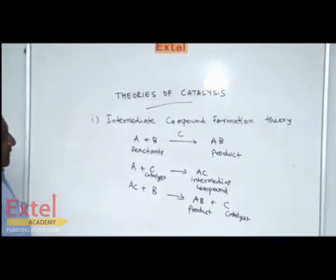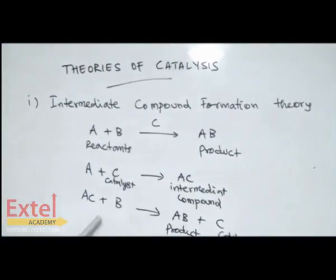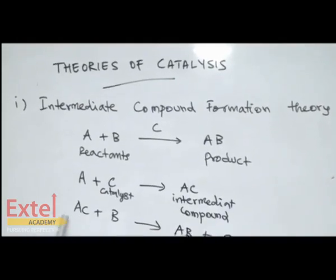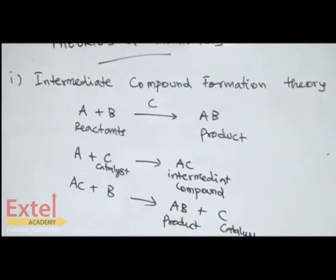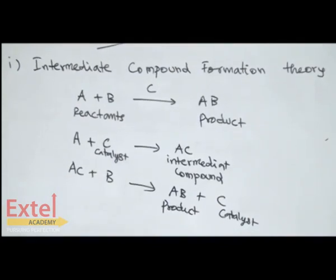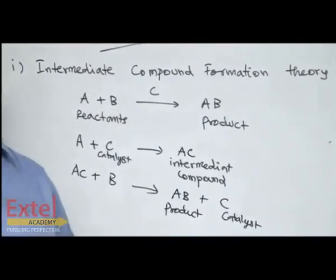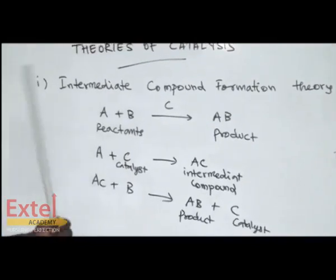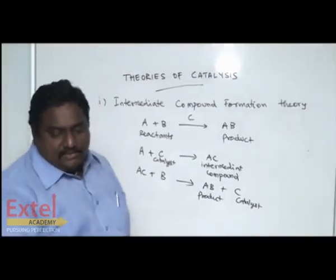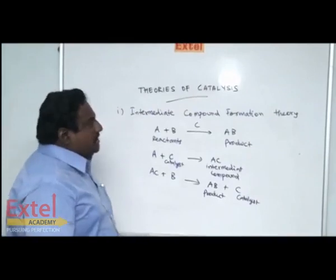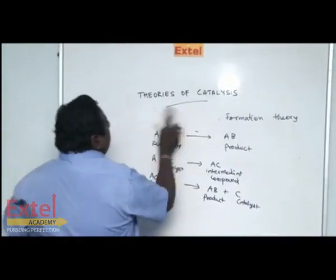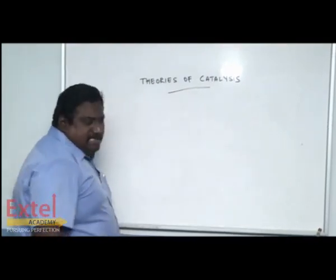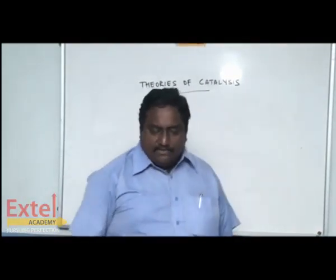The intermediate compound breaks to form the product. When the intermediate compound breaks very quickly, the reaction is called a fast reaction. The intermediate compound formation theory is successfully applicable to homogeneous catalysts. For a homogeneous catalyst, we can use this theory.